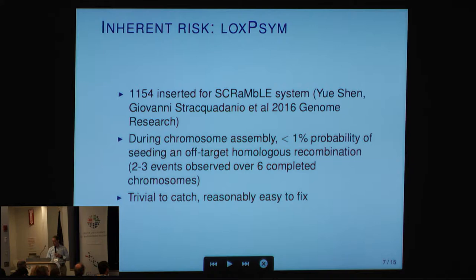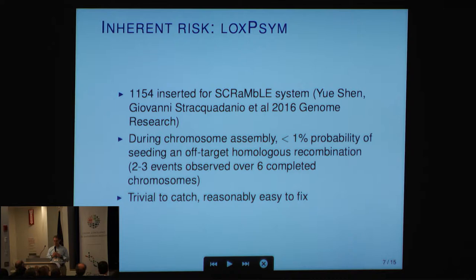Inherent risk: LOX-P SIM sites. So far in the chromosomes that have been made, about 1,000 LOX-P SIM sites. They've caused some problems in chromosome assembly — they seem to seed off-target homologous recombinations, occasionally tandem duplications. Trivial to catch, reasonably easy to fix, although maybe some of the labs in China would debate that. I think this is an inherent risk. I'm not sure there's a better strategy to get these sites in there. It causes some trouble in assembly; we knew it would be a problem. Actually, I think we're a little surprised that it's not more of a problem.